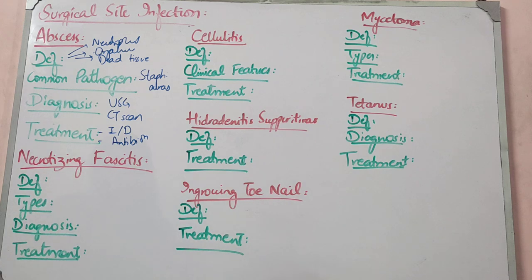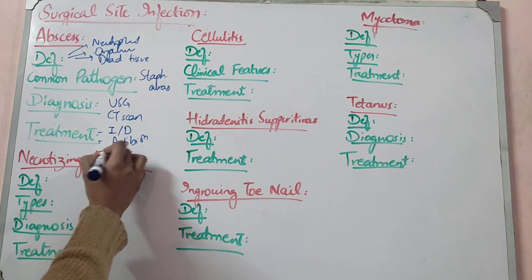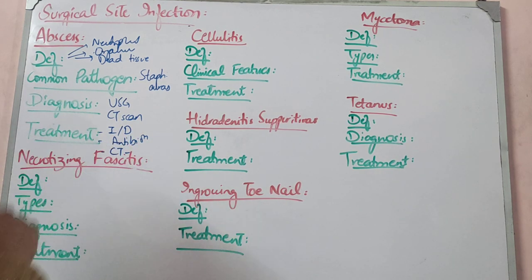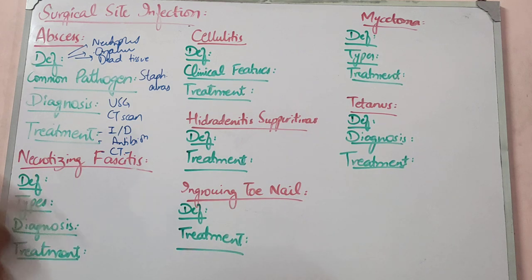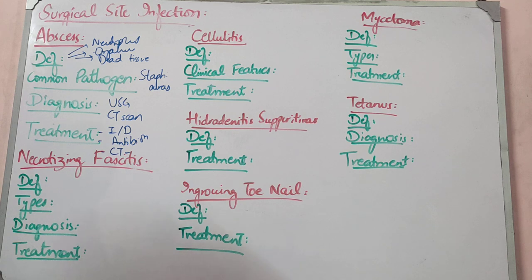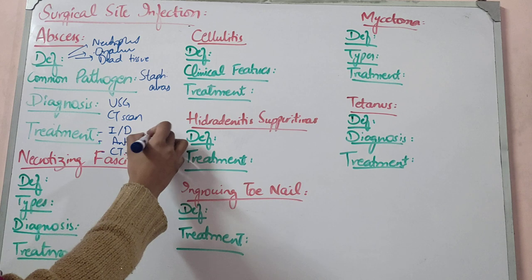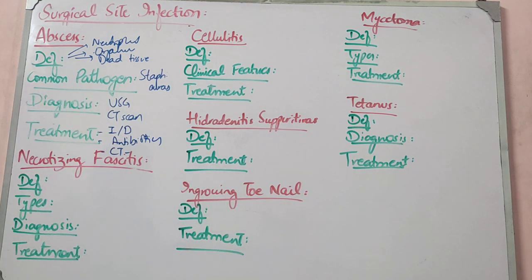For deep abscesses like liver abscess, you have to do CT-guided aspiration. You aspirate all the material out. The procedure includes puncture, aspiration, injection, and re-aspiration for hepatic abscess. After that, antibiotics are given, and you send the sample for culture and sensitivity.